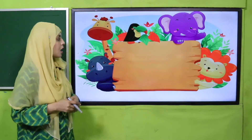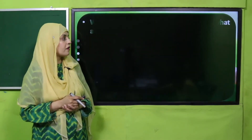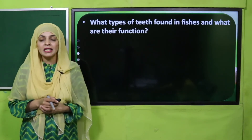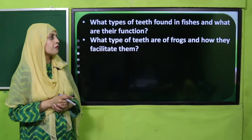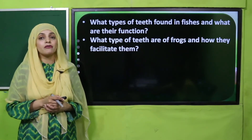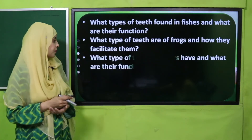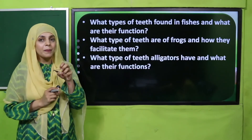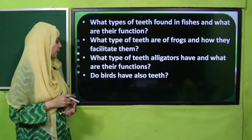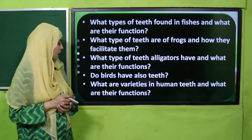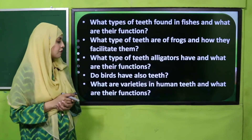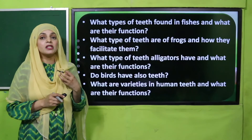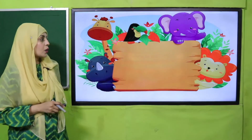Now is the time for evaluation. What type of teeth are found in fishes and what are their functions? Small teeth — they help in tearing the flesh. What types of teeth do frogs have and what is their function? Vomerine and maxillary — they help to hold the prey. What type of teeth do alligators have? Conical — they help to hold, grip, tear, and chew the prey. Do birds have teeth? No — they have ridges. What are the varieties in human teeth? Flat, conical, and pointed — they help in tearing, gripping, and chewing the food.